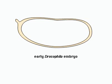In Drosophila embryogenesis, the body plan along the anterior-posterior axis is determined by a cascade of transcription regulatory events.